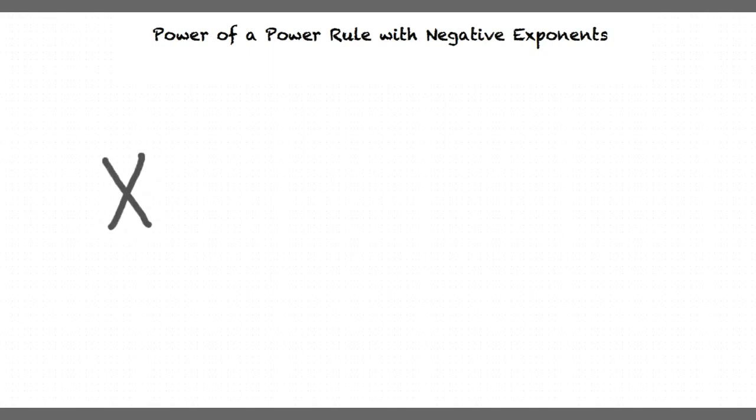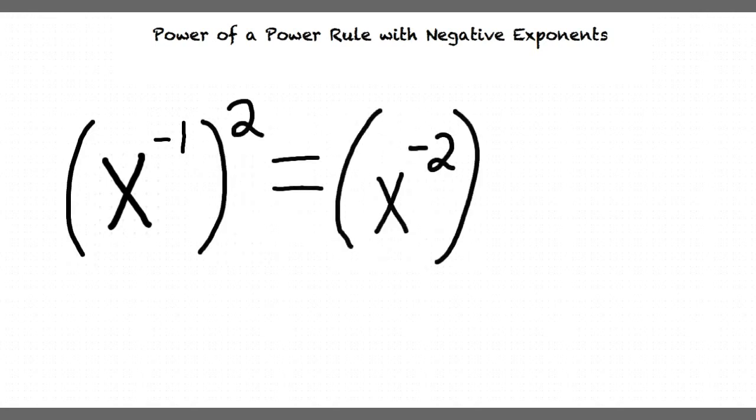For example, x to the minus 1 raised to the second power equals x to the negative 2, which is equal to 1 over x squared.